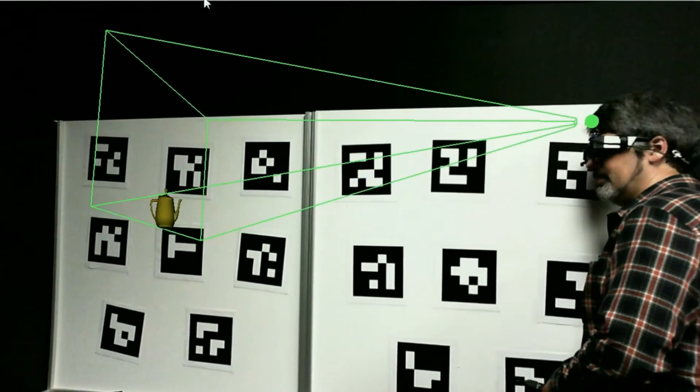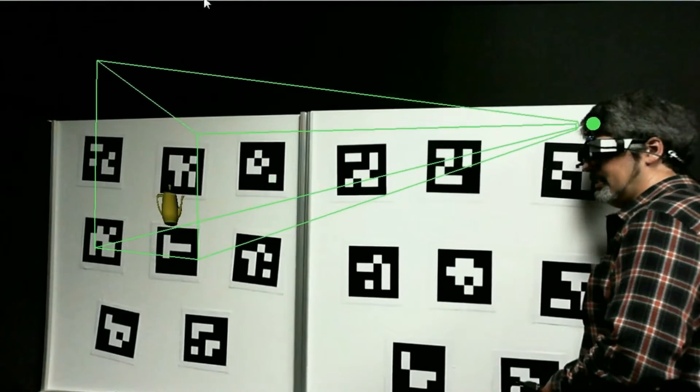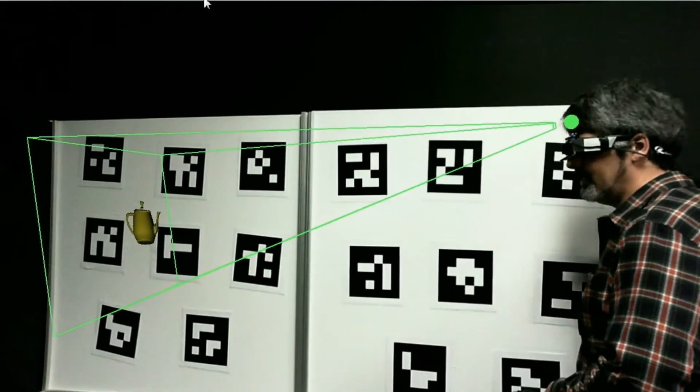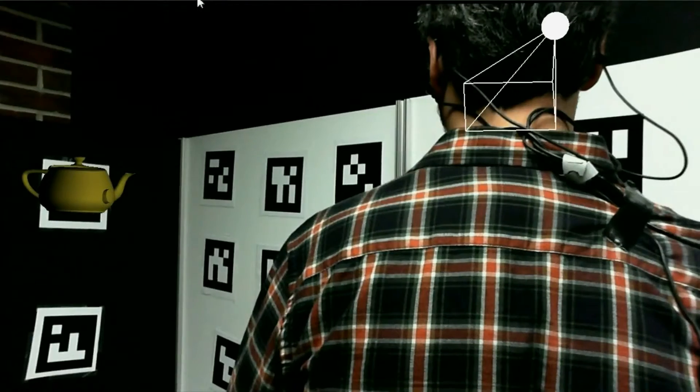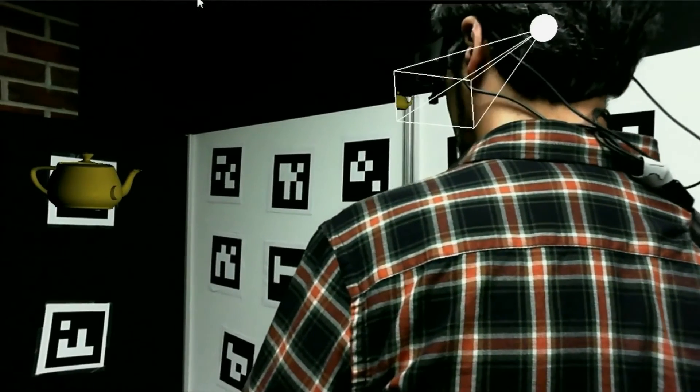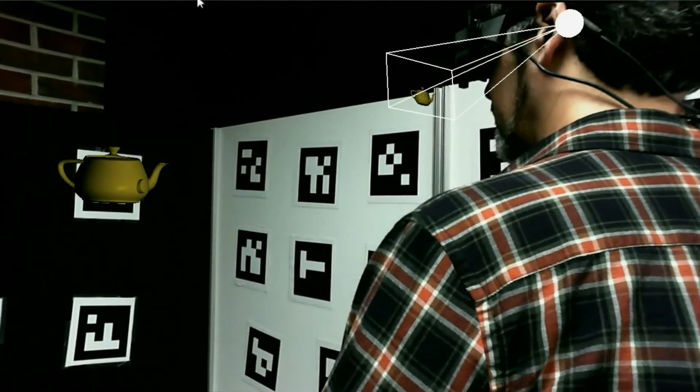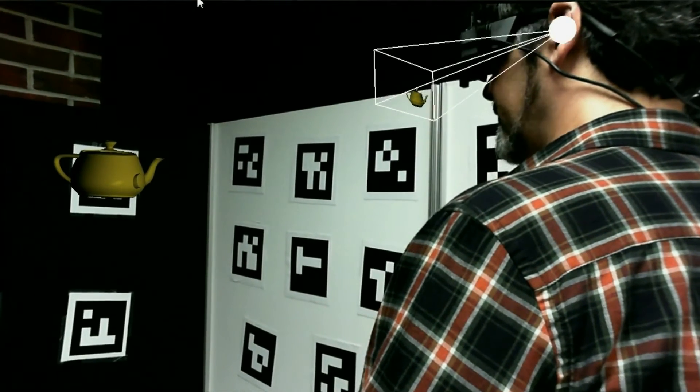This visualization method allows for quick identification of inadequate or degraded calibration results. It also affords the observer some sense of the user's view. This is vital information which is difficult to obtain when using see-through displays.